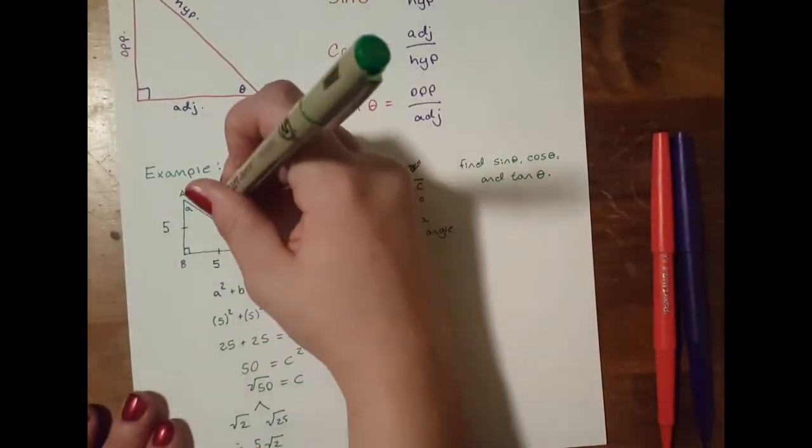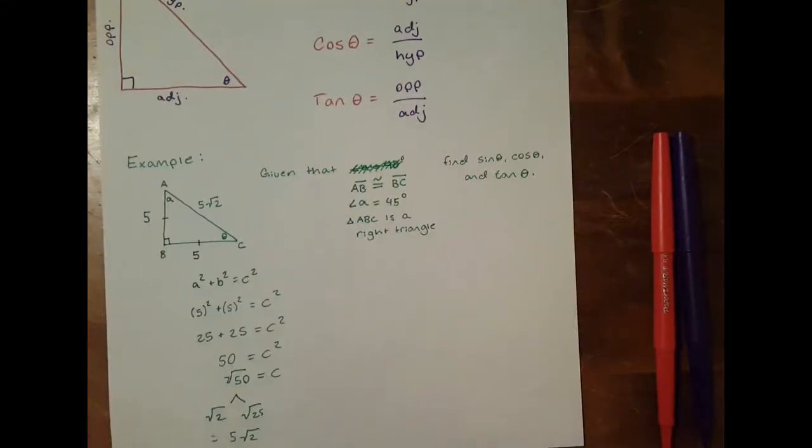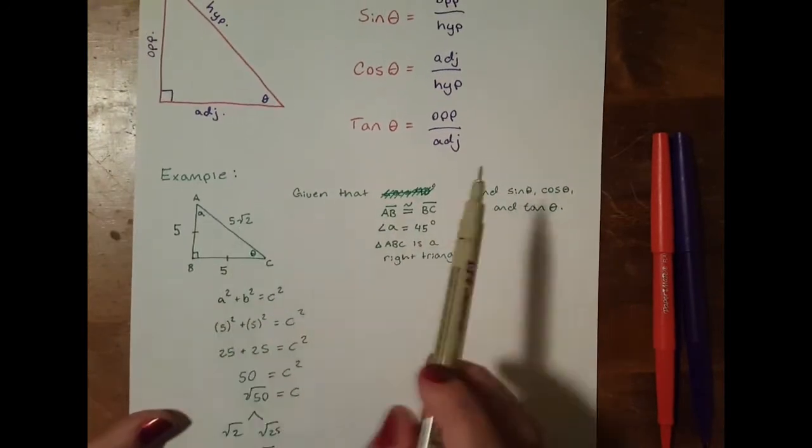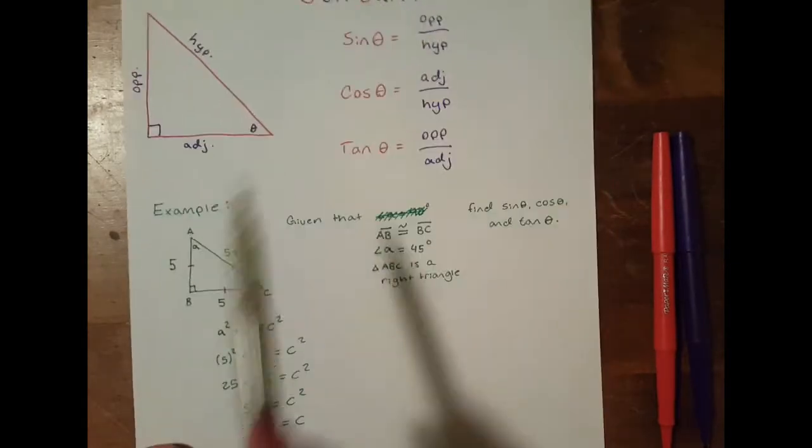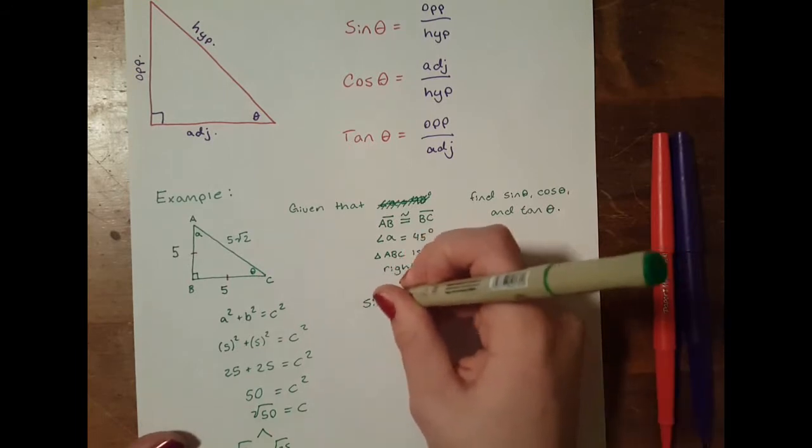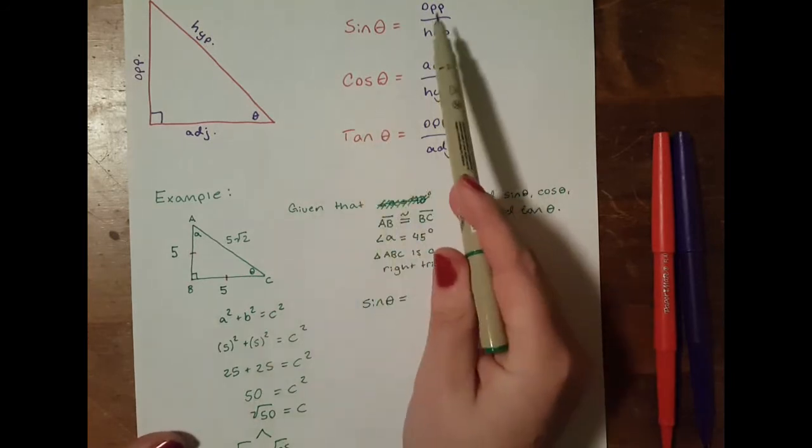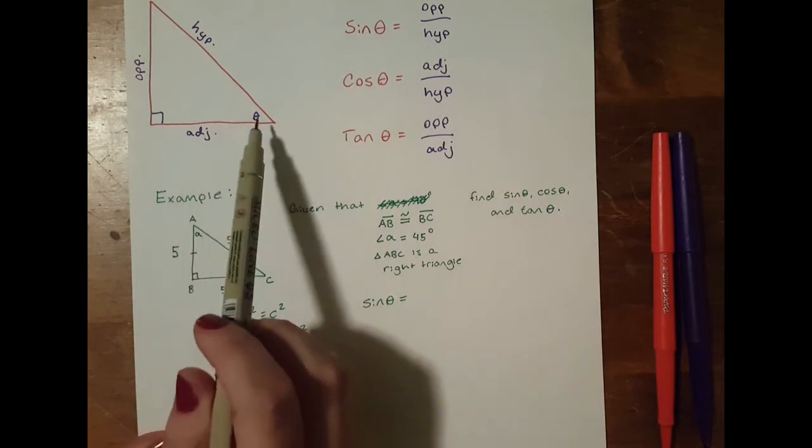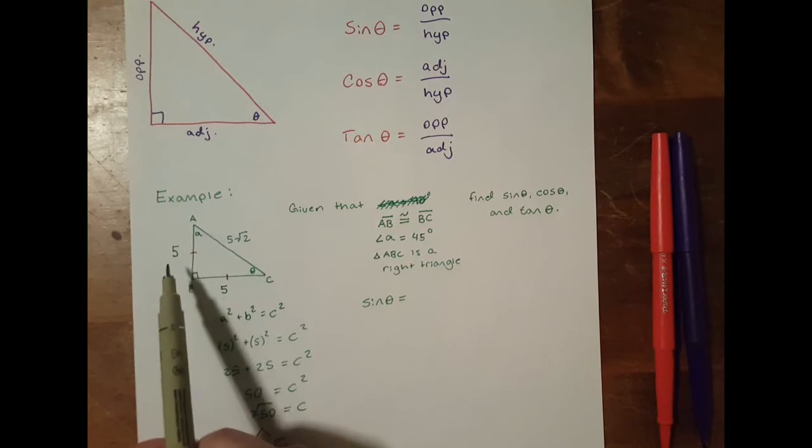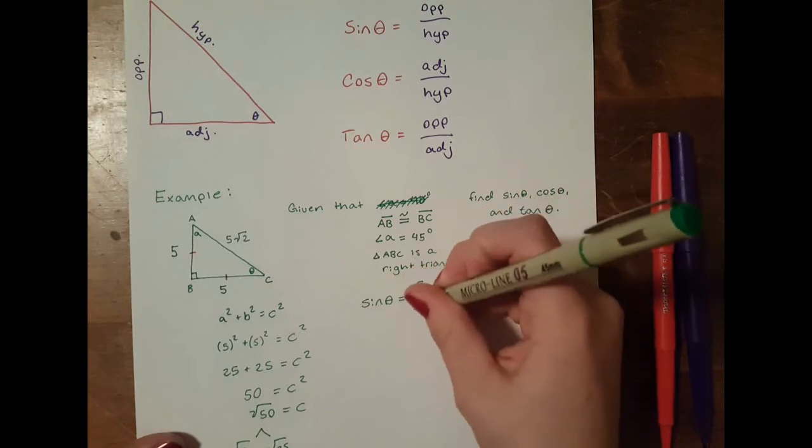So we know that this side, the hypotenuse, is equal to 5 root 2. Now we have all of our sides, which means we can easily plug them in to the SOH CAH TOA formula. So if we want to find sine of theta, we know that sine equals the opposite over the hypotenuse. In relation to theta, the opposite is 5 and the hypotenuse is 5 root 2, so sine equals 5 over 5 root 2.